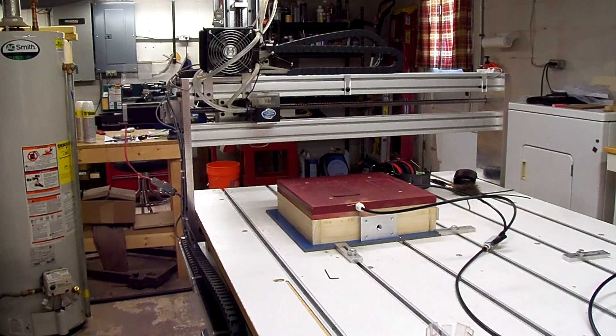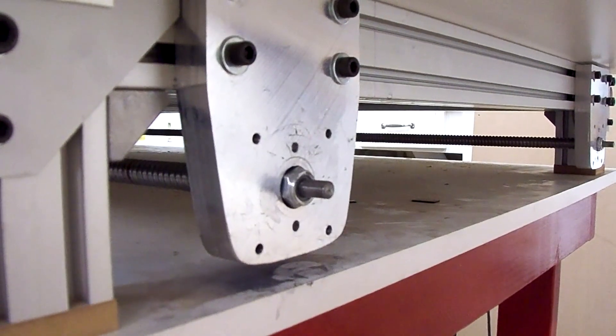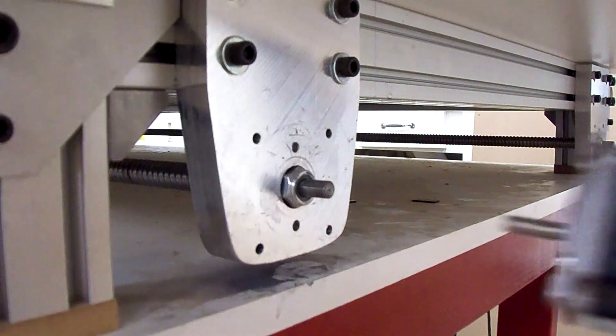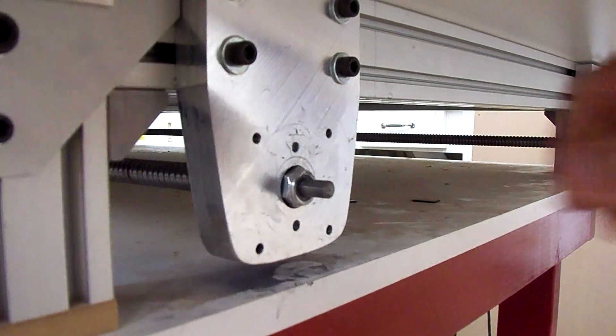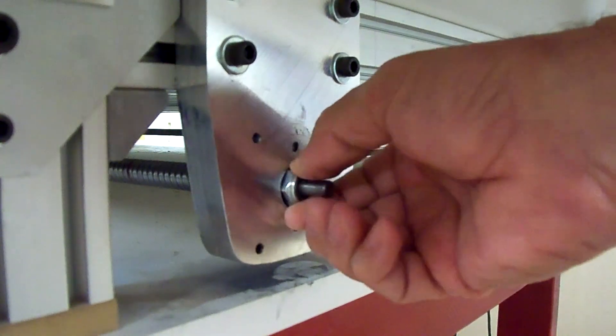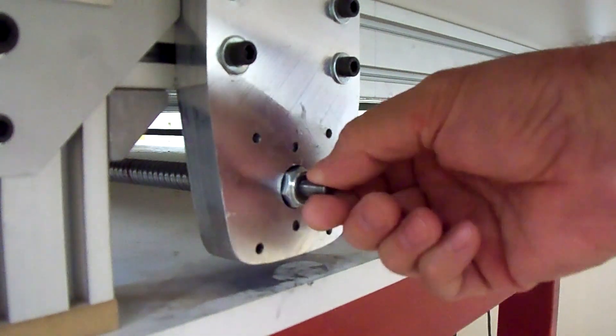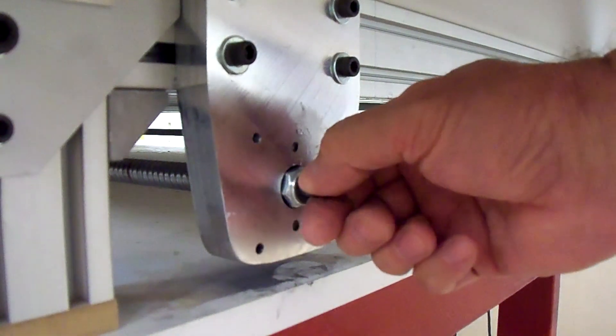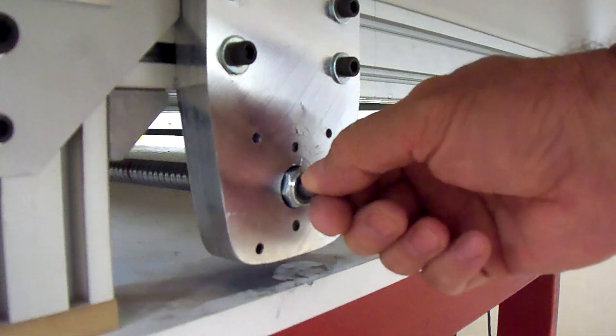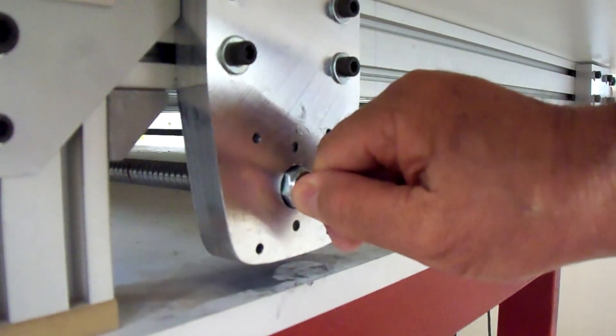So I went to check the ball screws to see if they were running parallel with each other. I went to take the motor off of this end here to check to see if the nuts were tightened the same on both of them, and when it finally came off the coupling had been broken.